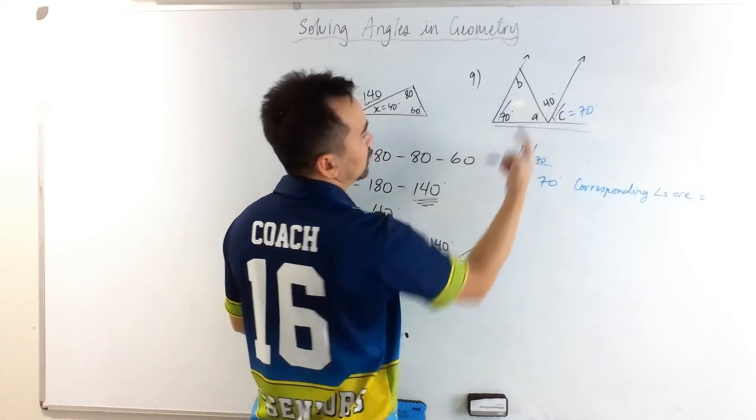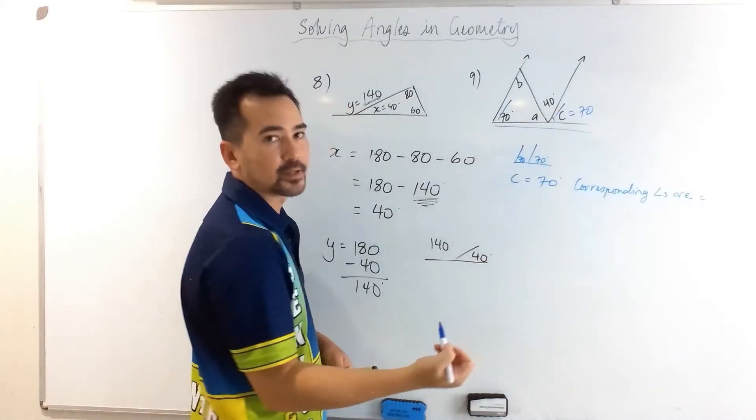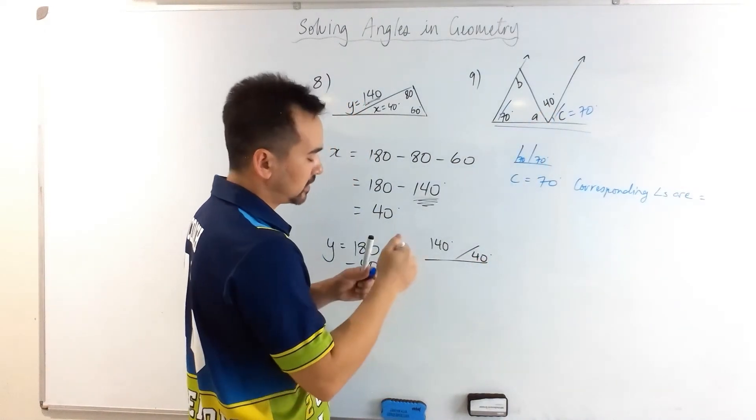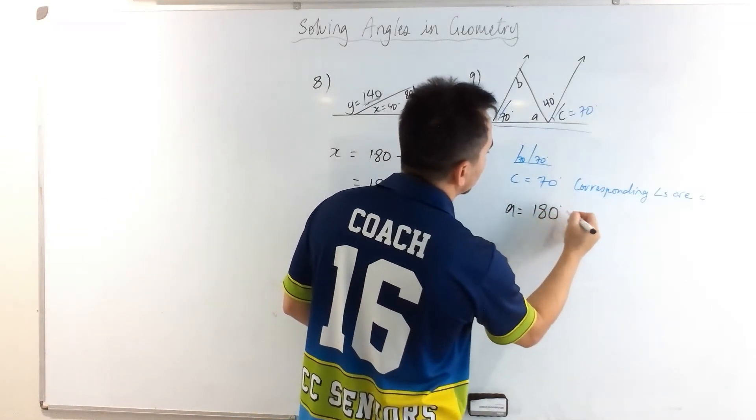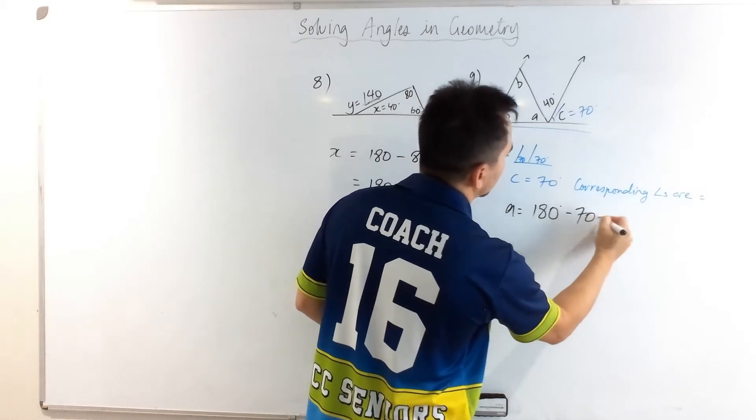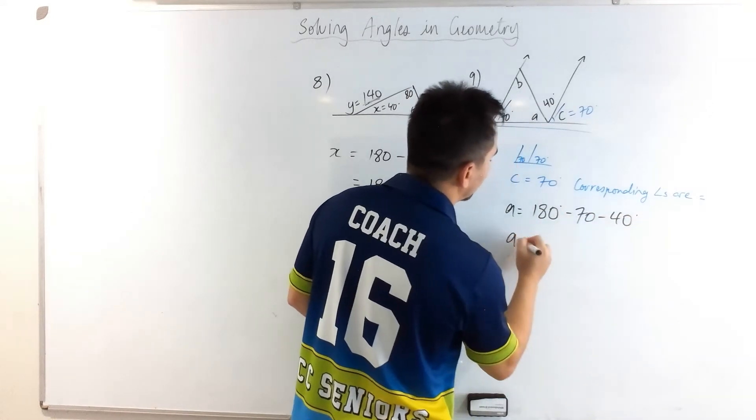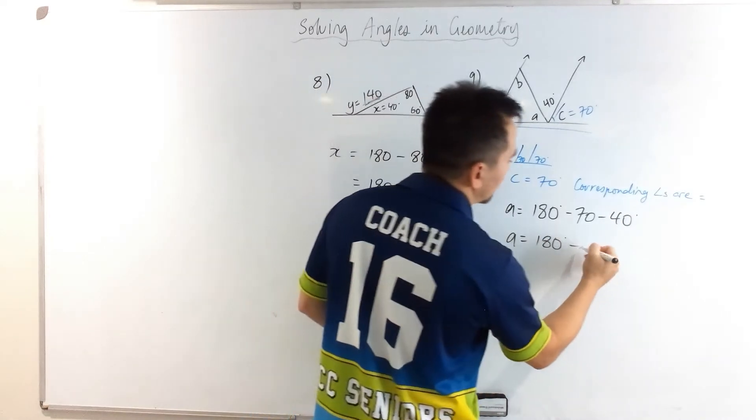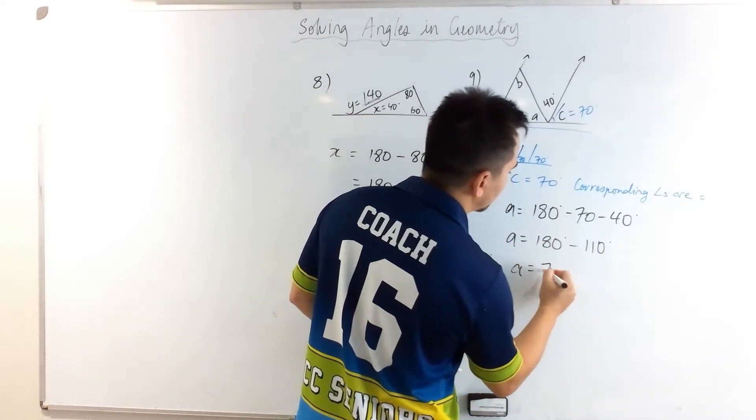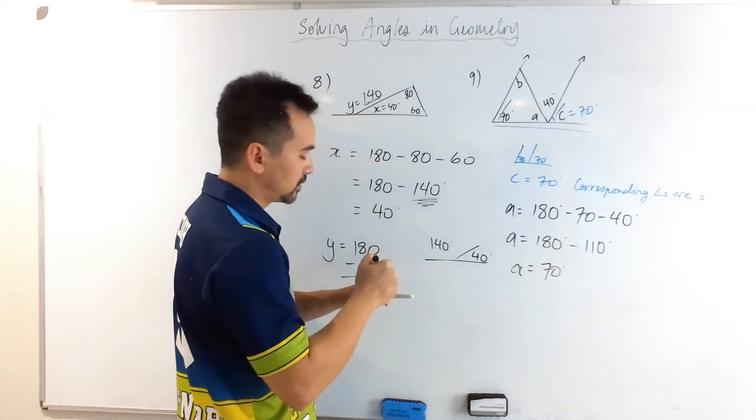We have 40 degrees in the middle, together that's 110 degrees. So that means a must be 180 take away 70 take away 40, which is the same as saying 180 take away 110, and a must be 70 degrees as well.